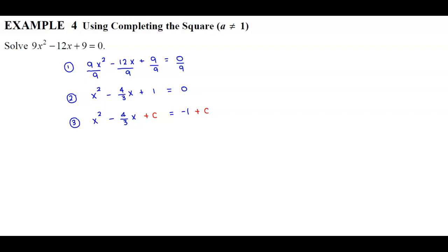We know that c is equal to one half the value of b, squared. Here b is the coefficient of the middle term, which is 4 thirds. So we take one half of 4 thirds: since 2 goes into 4 twice, that gives us 2 thirds.